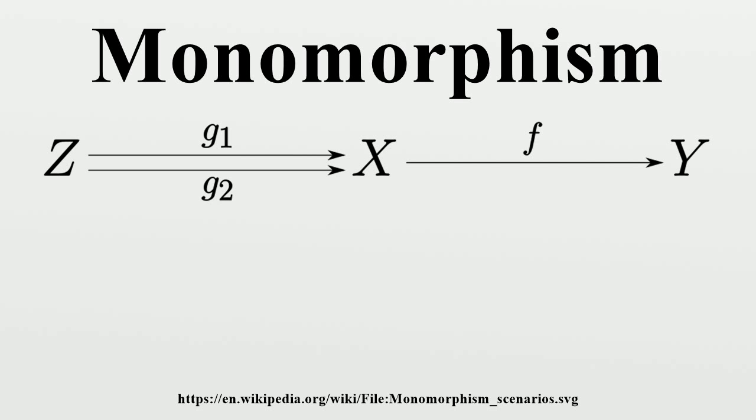In the category of sets, the converse also holds, so the monomorphisms are exactly the injective morphisms. The converse also holds in most naturally occurring categories of algebras because of the existence of a free object on one generator.